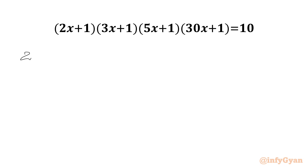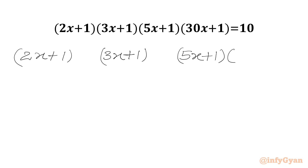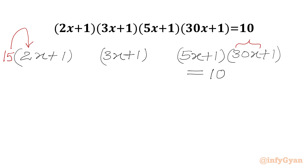Let us get started by writing our equation: (2x+1)(3x+1)(5x+1)(30x+1) = 10. Now we have 30x available here, so we want to convert all the coefficients in the other brackets equal to 30. We need to multiply the first bracket by 15, since 15 times 2 gives us 30. We need to multiply the second bracket by 10, since 10 times 3 gives us 30. We multiply the third bracket by 6, so that 6 times 5 gives us 30.